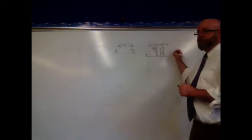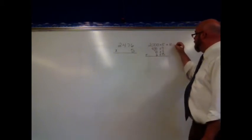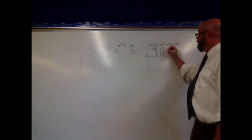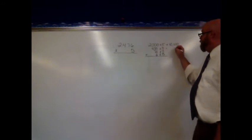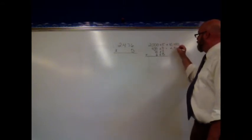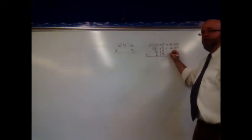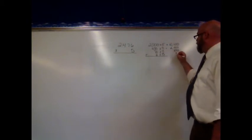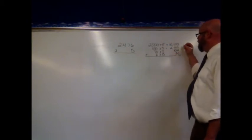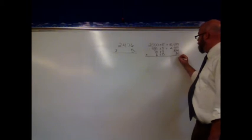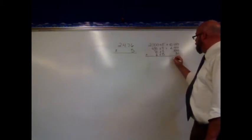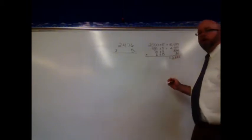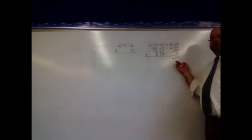Well, 2,000 times 5 is 10,000. 400 times 5 would be 2,000. 70 times 5 would be 350. And 6 times 5 would be 30. Then I could just add that all up. I would get 12,380.